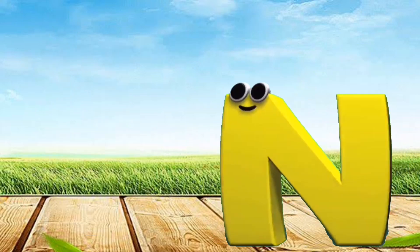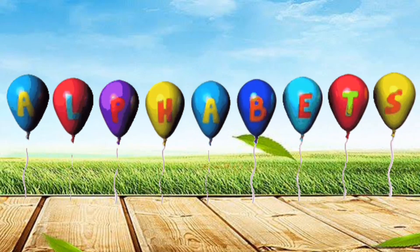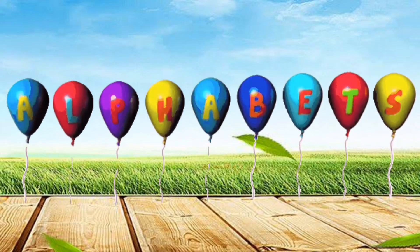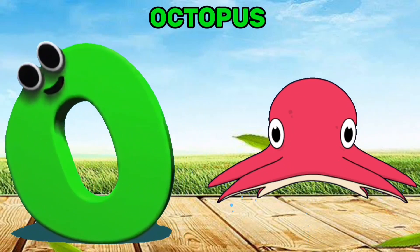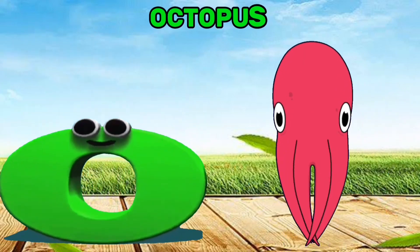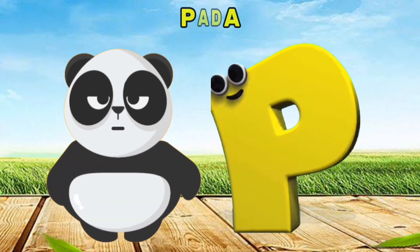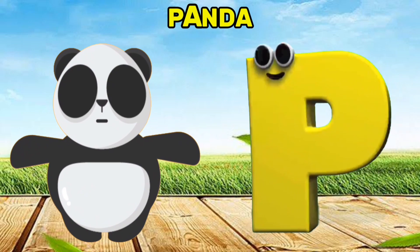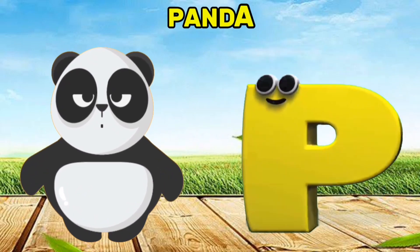It's the letters of the alphabet. O is for Octopus. O, O. Octopus. P is for Panda. P, P, P.